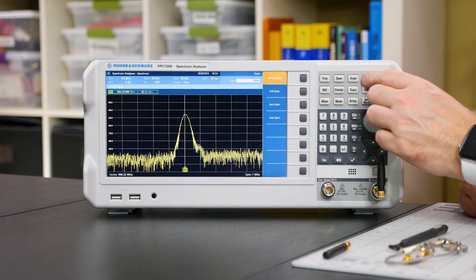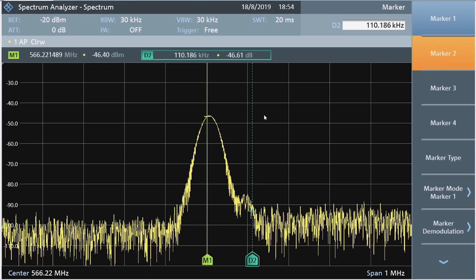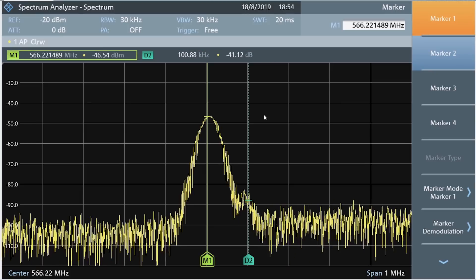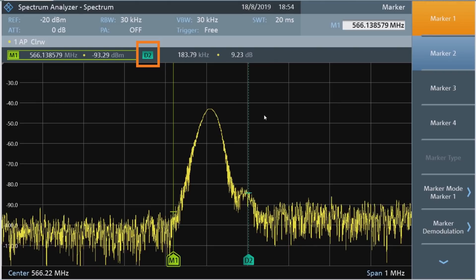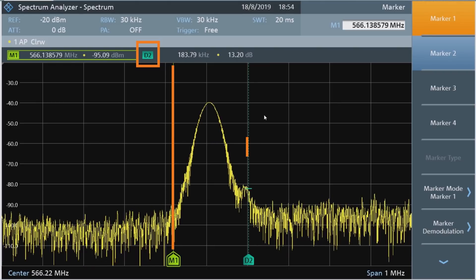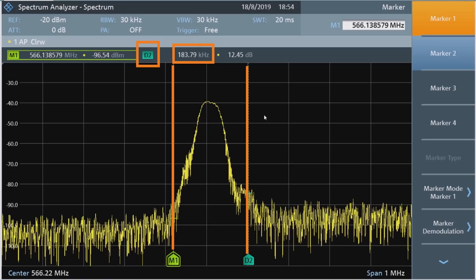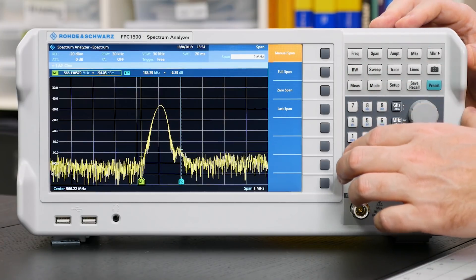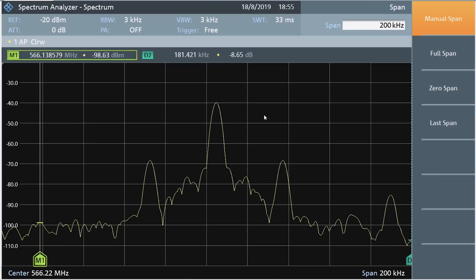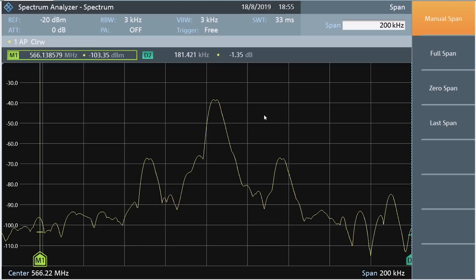So, instead of re-centering it, let's measure the bandwidth of this signal, and set the span one last time. I'll turn on a second marker, and move it to the right of the pulse, and then move the first marker to the left. The second marker I turned on is called a delta marker. It measures the difference between the first marker and itself. And we can see that it's measuring a width of 180 kHz. So, let's just set the span to something a little bit larger, like 200 kHz.